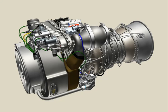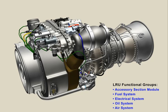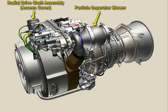The engine has several line replaceable units, or LRUs. An LRU is a part which can be removed and replaced at AVM level with another like part. The engine's LRUs are divided into five functional groups: accessory section module, fuel system, electrical system, oil system, and air system.